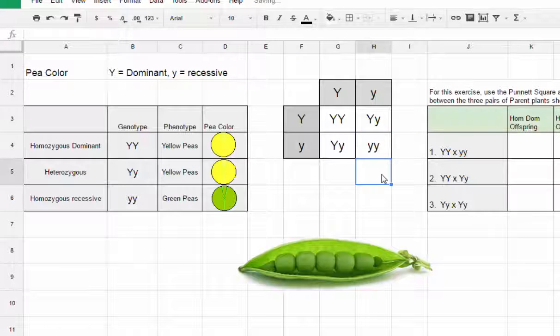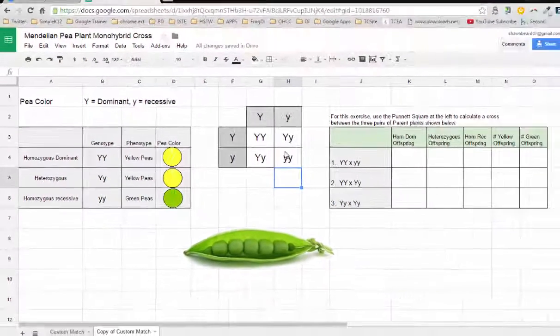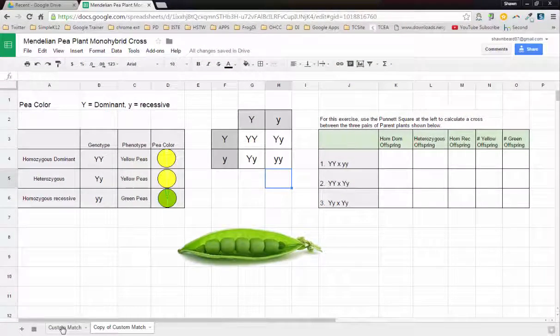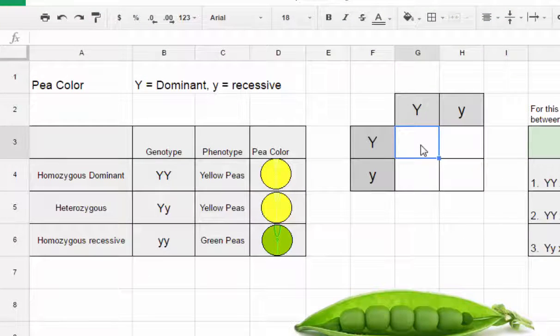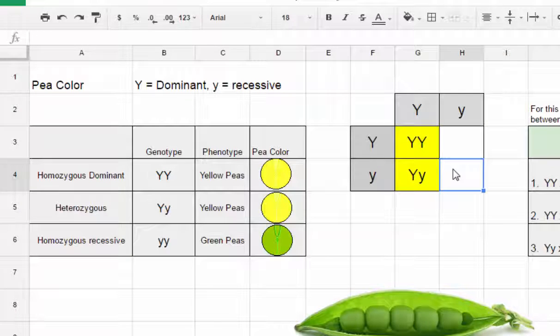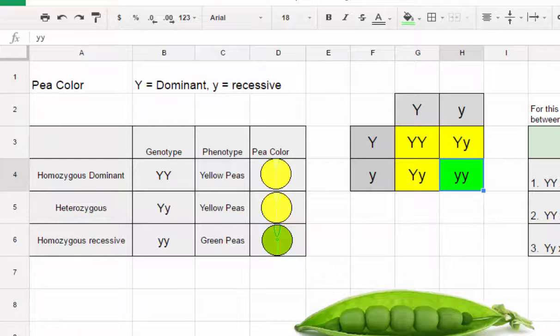Right now this just looks like a jumbled mess of letters to them, but if I go over here to this sheet which has already been pre-formatted, now when a student enters the genotype of the offspring it's color coded so that they know what the phenotype outcome is for that offspring and they can see it and then they can use that information to fill in this chart over here.